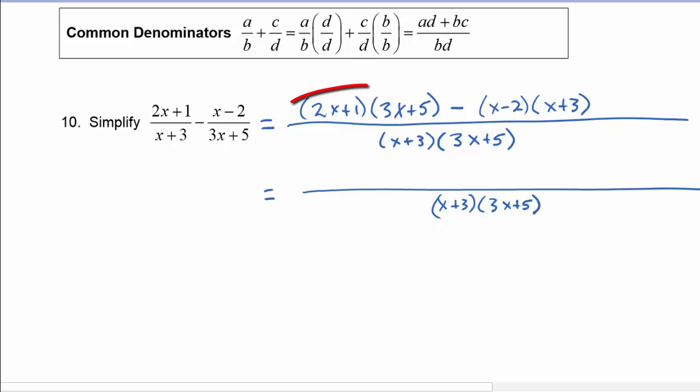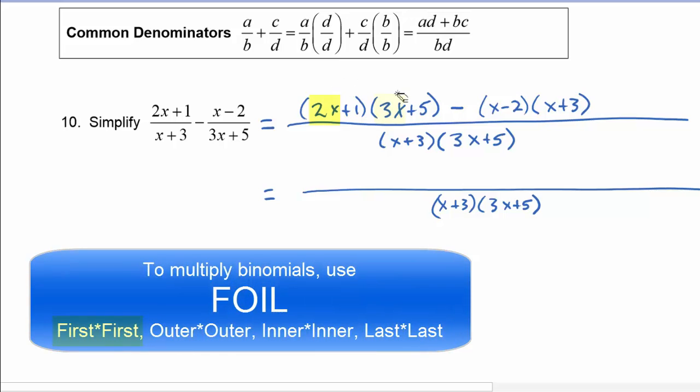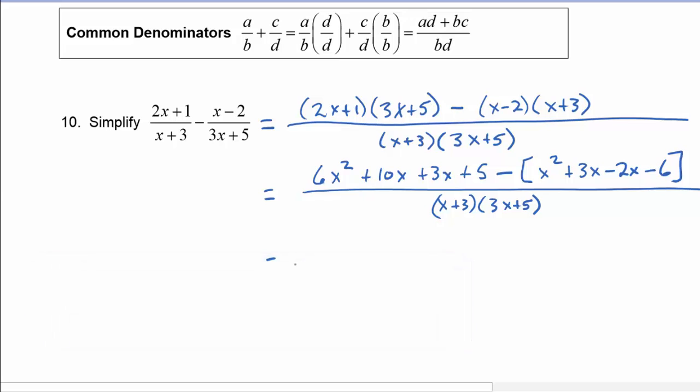Our common denominator remains x plus 3 times 3x plus 5, and we need to multiply out each term. So we've got 2x times 3x is 6x squared, 2x times 5 is 10x, 1 times 3x is 3x, and 1 times 5 is 5. Then we have to subtract away x times x, x times 3 which is 3x, negative 2 times x which is minus 2x, and negative 2 times 3 which is minus 6.